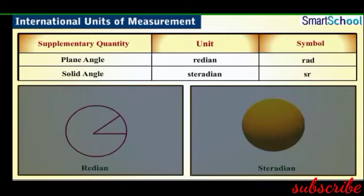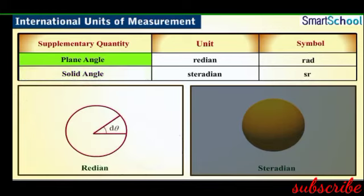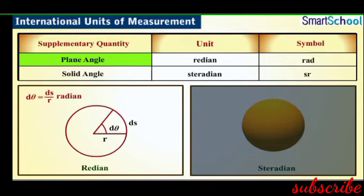Apart from these basic units, SI has defined two more units for two supplementary quantities, namely plane angle and solid angle. Plane angle dθ is the ratio of the length of an arc of a circle to the radius of the circle and is measured in radian, denoted by small letters rad. It is defined as the angle subtended at the center of a circle by an arc of length equal to the radius of the circle.